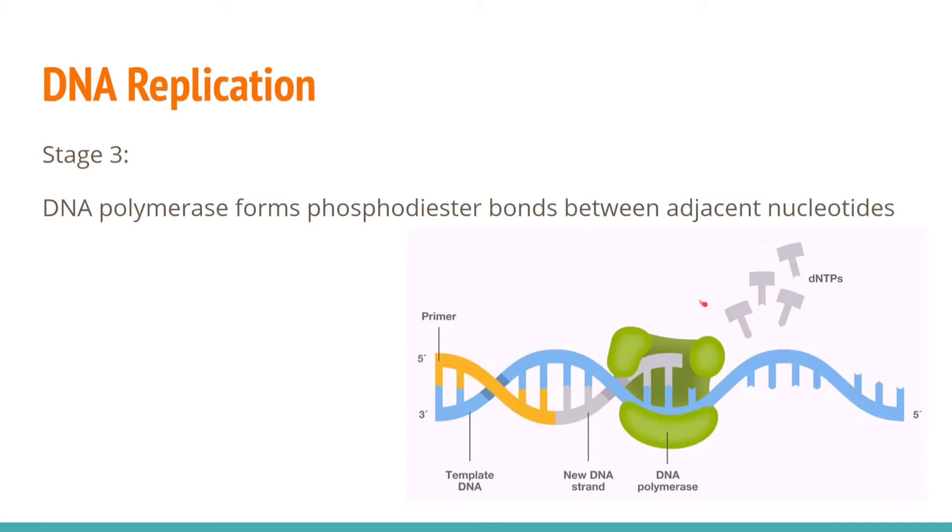In the previous stage, these nucleotides attached onto the unpaired bases, but they were not actually bonded to each other. So DNA polymerase forms these phosphodiester bonds between the adjacent nucleotides to form the complete strand of DNA. It's important to remember that DNA polymerase only runs five prime to three prime.